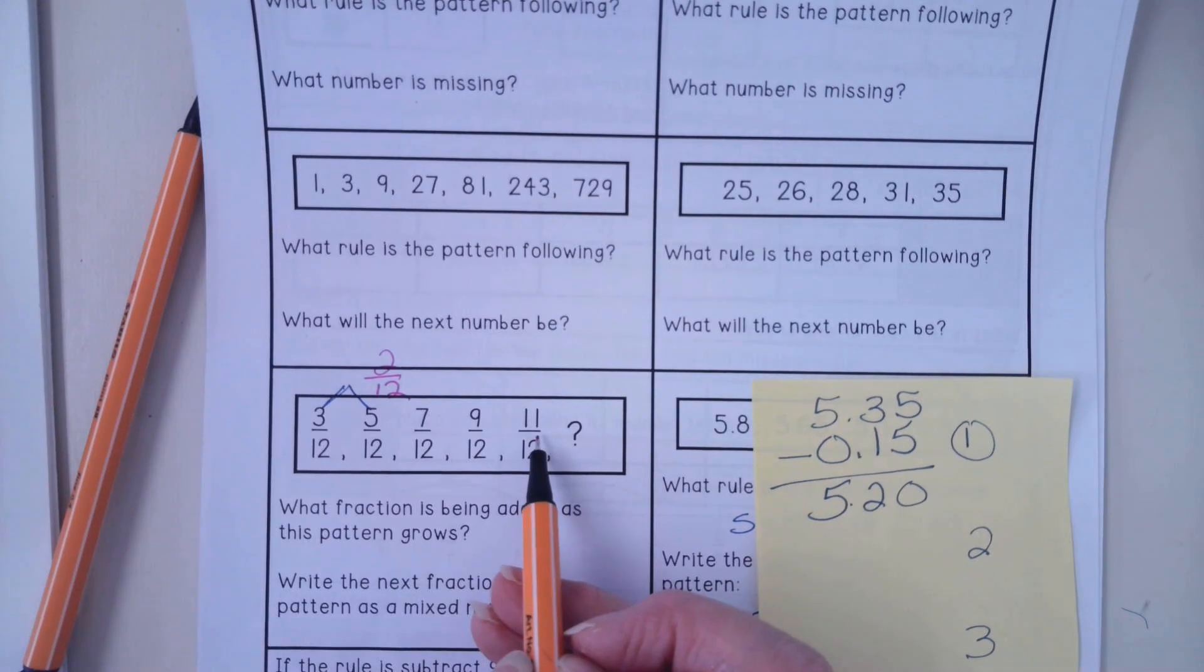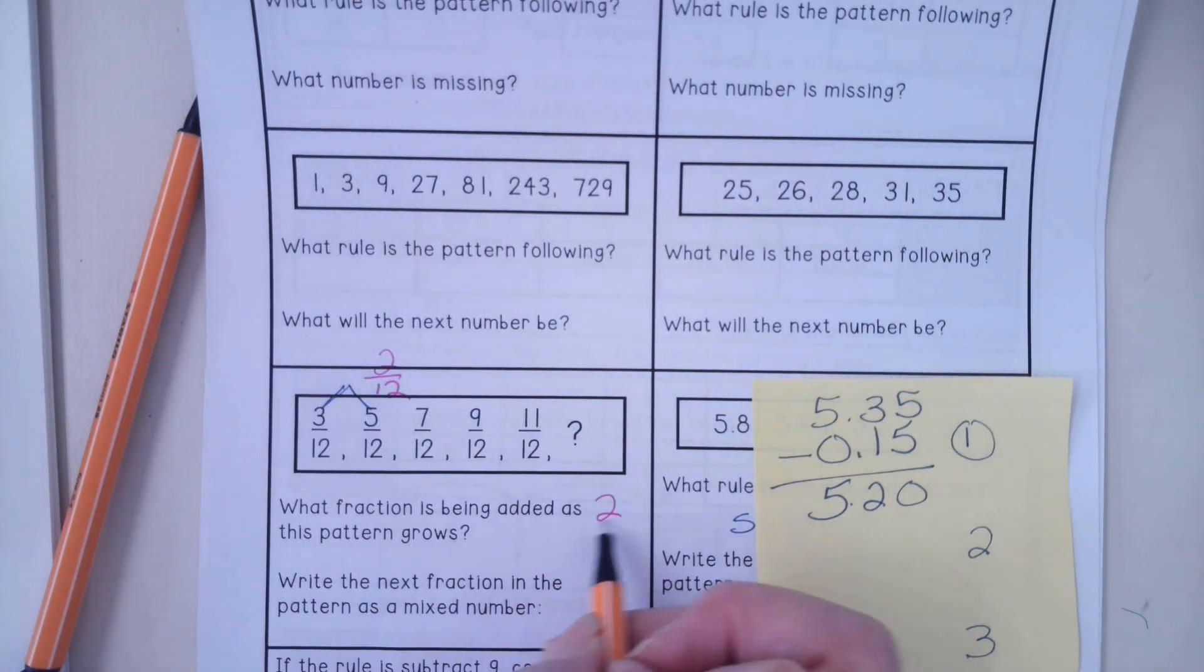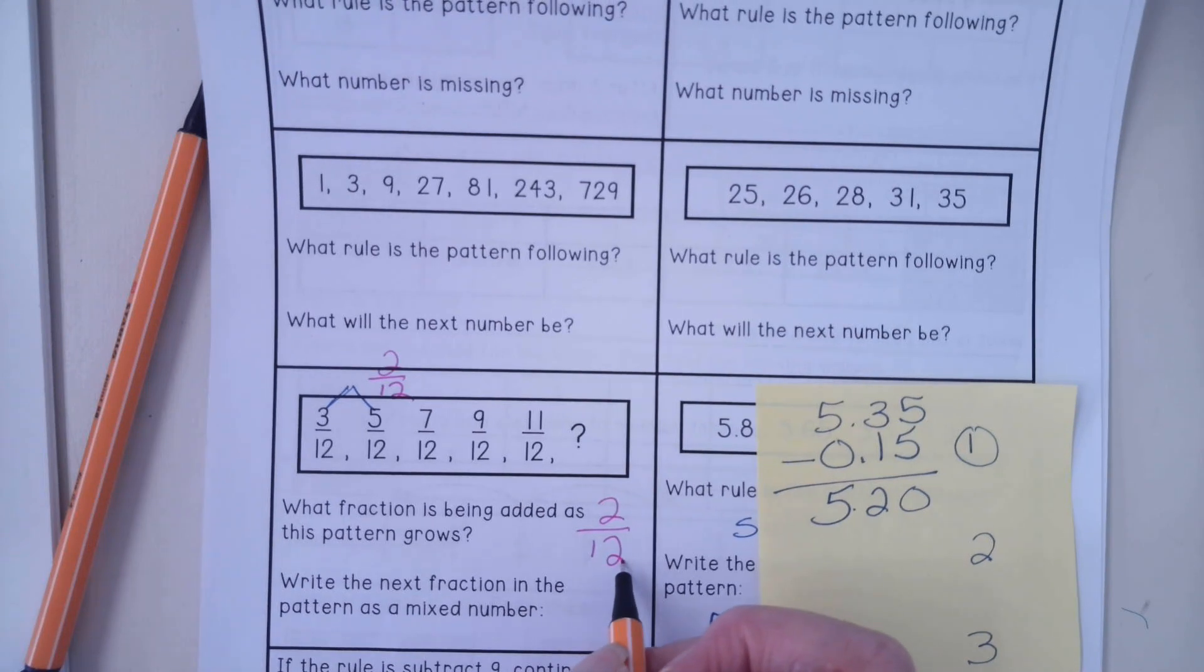Now remember, if you get above 12 12ths, you are going to change to a mixed number. So our first answer was 2 12ths.